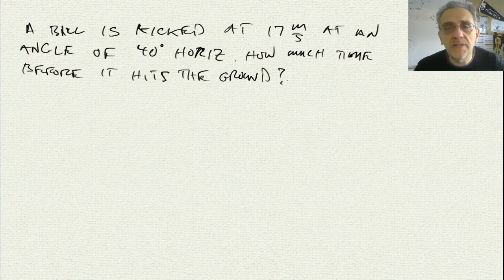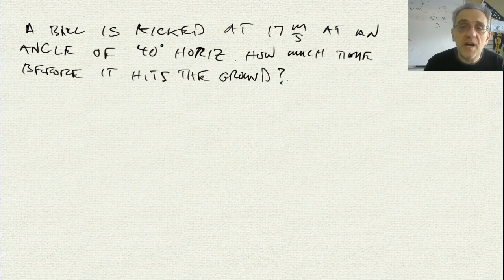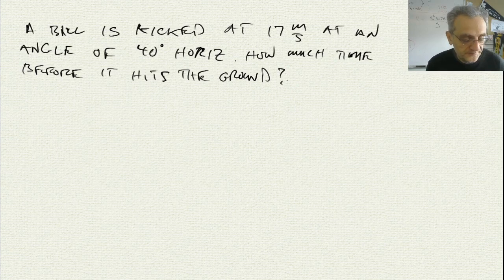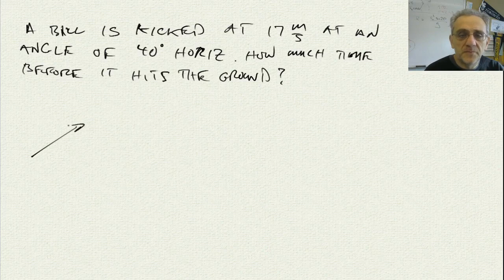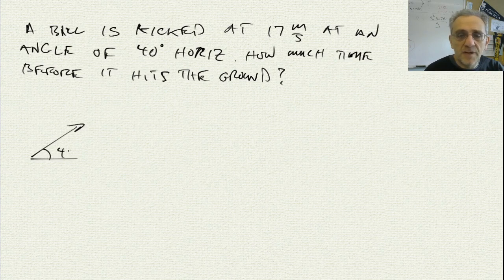Our next question is, a ball is kicked at 17 meters per second at an angle of 40 degrees to the horizontal. How much time before it hits the ground? Pause the video now and see if you can figure it out. So, the solution to this problem, let's draw a little picture here. Here, we've got our angle of 40 degrees.